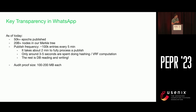One big downside of the current implementation is that our audit proofs are really large. We're publishing epoch receipts every five minutes, but right now the audit proofs are like hundreds of megabytes. It's not really feasible to expect that everyone is going to download hundreds of megabytes to verify that we're running this properly — maybe some power users would. We would love to figure out ways to shrink this.